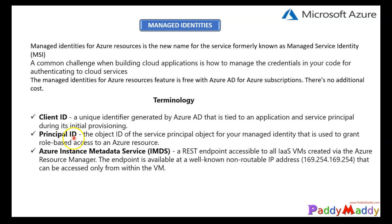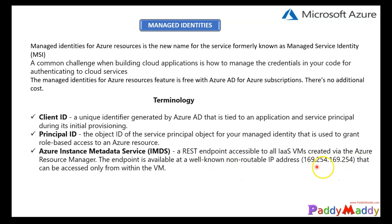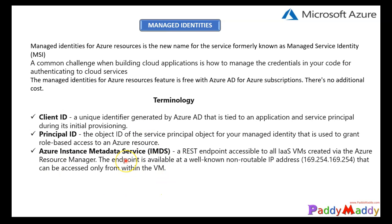The principal ID is where we apply role-based access. There is also an additional service which runs on a non-routable, well-known IP address: 169.254.169.254. This is called the Azure Instance Metadata Service, or IMDS. It works with a REST endpoint accessible for all infrastructure-as-a-service VMs created with the Azure Resource Manager model. When you create a VM and associate it with a managed identity, IMDS is provisioned in the backend on that same IP address within the VM.